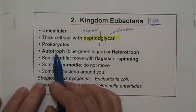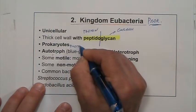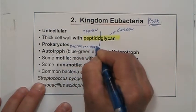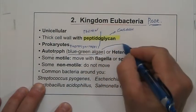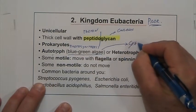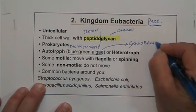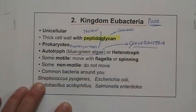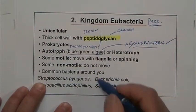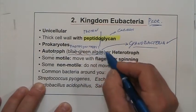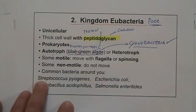Eubacteria can be autotrophs — meaning they do photosynthesis. We call these blue-green algae or, the preferred name, cyanobacteria. We talked about cyanobacteria in evolution because they were the first organisms that started doing photosynthesis on planet Earth. Cyanobacteria is the preferred name; we are trying to move away from blue-green algae as it can be confusing.